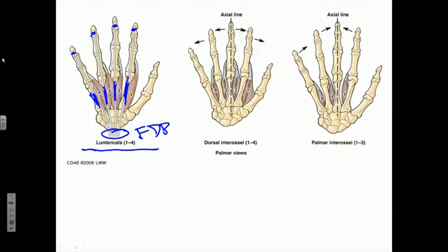The lumbricals arise mainly from the radial or thumb sides of those tendons. As such, the lumbricals arising from the palm of the hand will cross the anterior or flexor sides of the knuckle joints, but then they sweep around onto the radial — the lateral — side of each finger. The tendon of each lumbrical blends into and attaches to a slip of the tendon of the extensor digitorum on the other side. This is why we say that lumbricals have no bony attachments.